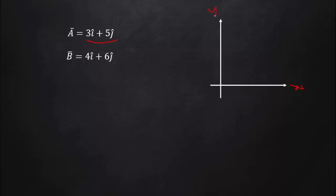For example, if b-bar = 4î + 6ĵ, it is in the xy-plane. Now A-bar = 3î + 5ĵ means there is a vector of magnitude 3 in the x-direction and a vector of magnitude 5 in the y-direction — their resultant is A-bar. Similarly, B-bar has a magnitude-4 vector in x and a magnitude-6 vector in y — their resultant is B-bar.